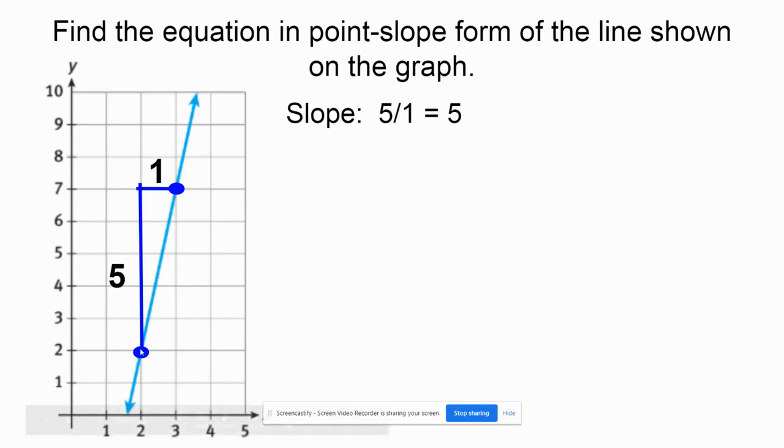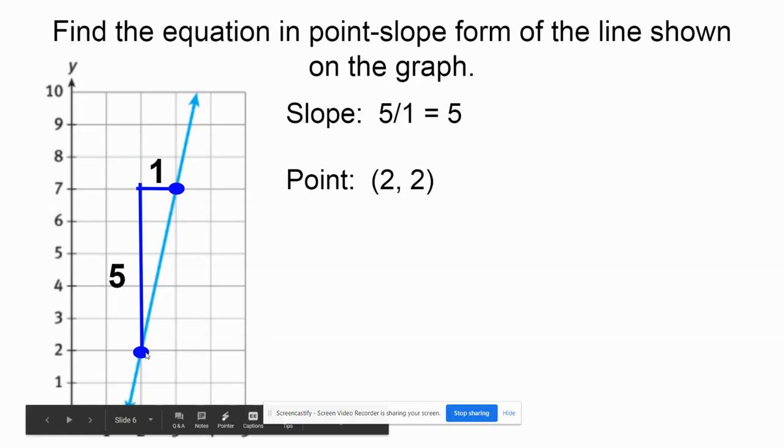I've gone up 5 and over 1. So 5 divided by 1 gives me 5. I can use the point 2, 2, or I could have used the point 3, 7 if I wanted to. That would have been totally fine as well.